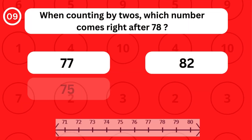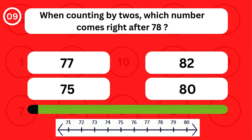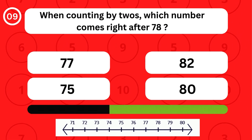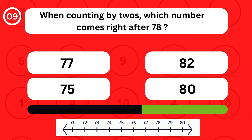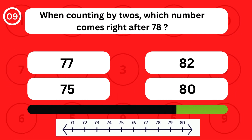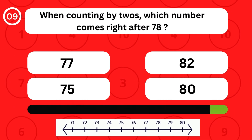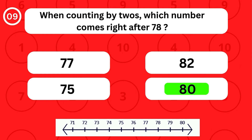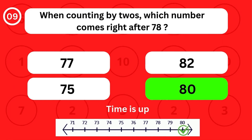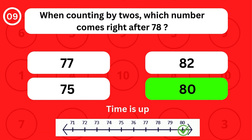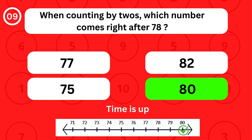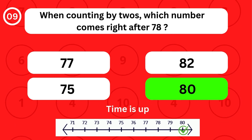When counting by twos, which number comes right after 78? When counting by twos, the number 80 comes right after 78.